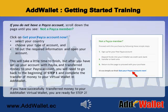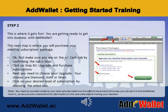If you have successfully transferred money to your AdWallet virtual wallet, you are ready for Step 2. This is where it gets fun. You are getting ready to get into business with AdWallet. This next step is where you will purchase your monthly subscription package. First, make sure you are on the plus minus cash tab by confirming the tab is blue. Now, click on Step 2: Upgrade and Purchase Subscriptions.